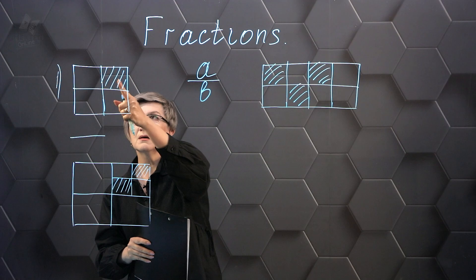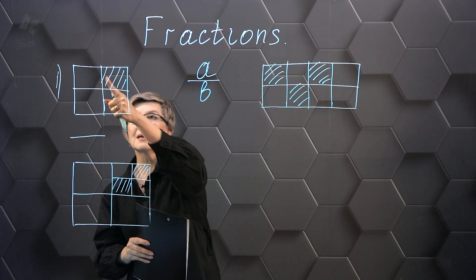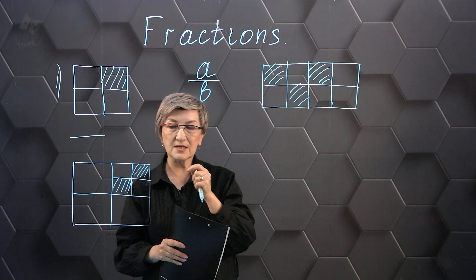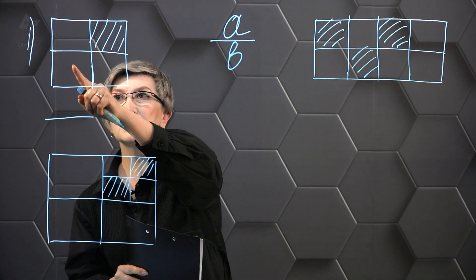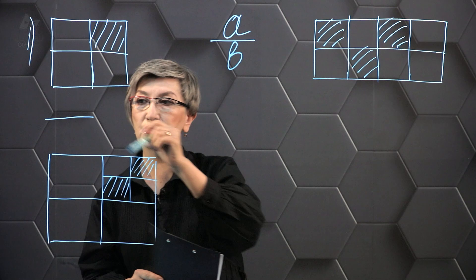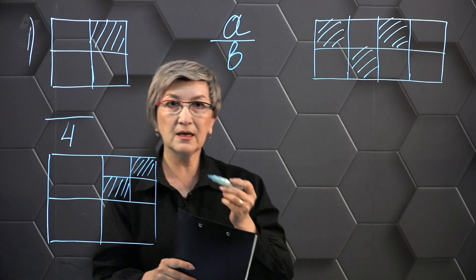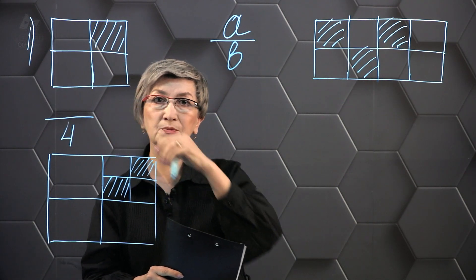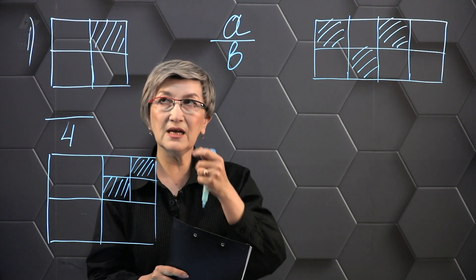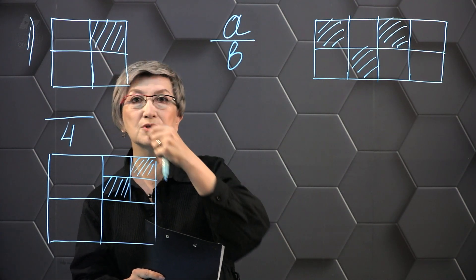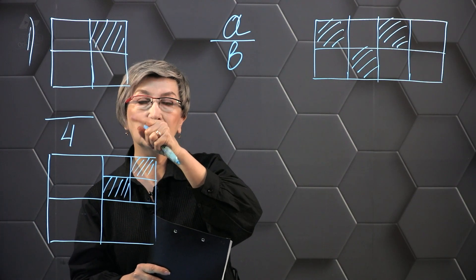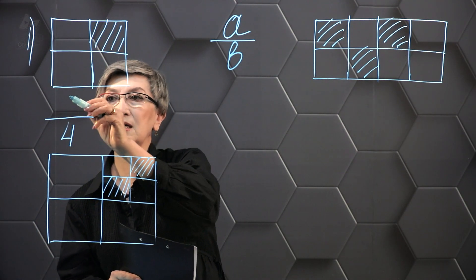In our example, our square is divided into four equal parts. The total number of parts is one, two, three, four. So I write the number four under the fraction line. And above the fractional line, I have to write down the number of parts that are shaded in our figure. And that's one part. So above the fractional line, I'm going to write the number one.